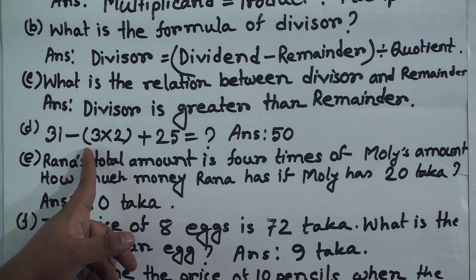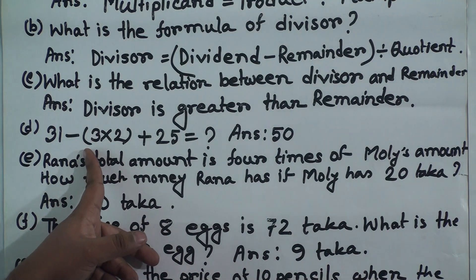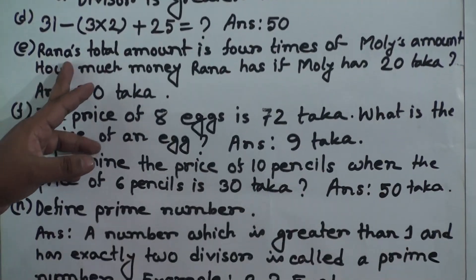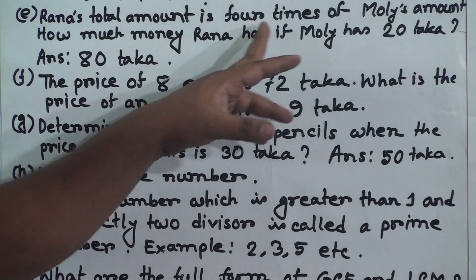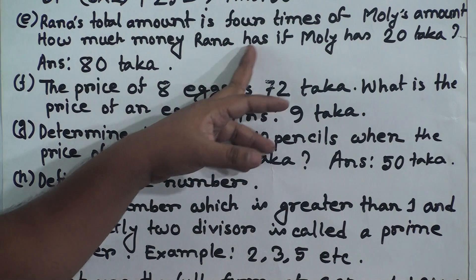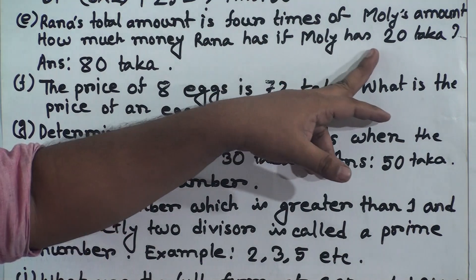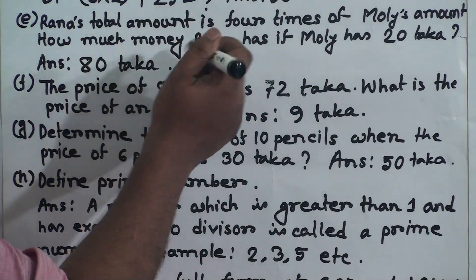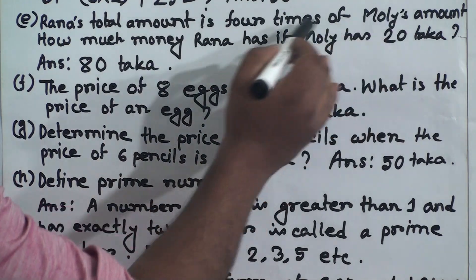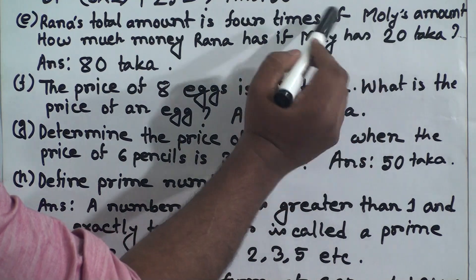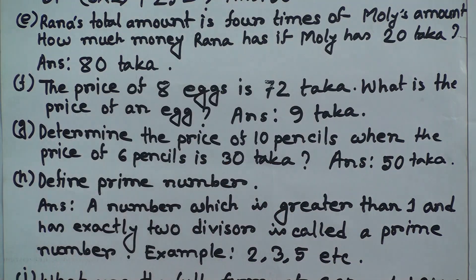If you want to show the solution procedure that will be fine, but if you don't write it, that is also okay. (e) Rana's total amount is four times Molly's amount. How much does Rana have if Molly has 20 taka? We multiply 4 by Molly's amount: 4 × 20 = 80. So 80 taka is Rana's amount.